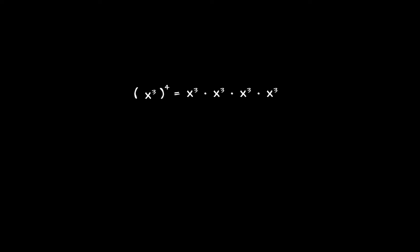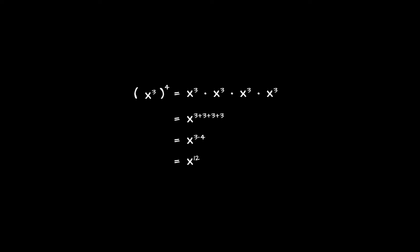By our first property of exponents, this can be simplified as x to the 3+3+3+3 — we just add the exponents together. And that is equal to x to the power 3 times 4, which is x to the power 12. So it turns out we just wanted to multiply those two original exponents together. This leads us to our second general property: when we take x to the power m and raise it to the power n, the result is x to the power m times n.